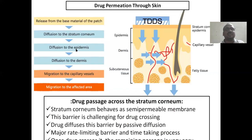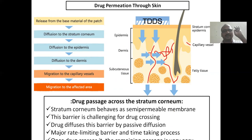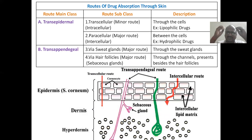Drug permeation through the skin involves these steps: release of drug from the base material, diffusion through the stratum corneum, diffusion through the epidermis and dermis, and migration into capillary vessels. All these steps you have to write in the examination — following the same presentation will help you get a distinction.